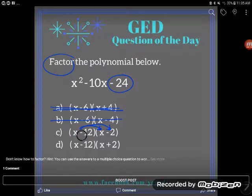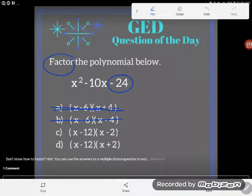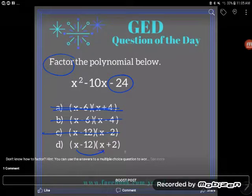Now you guys, I really hope it's D, because if it's not, I screwed something up either when I wrote my problem or when I was working my problem. But let's take a look and just confirm here. So x times x is x².